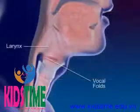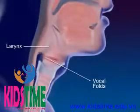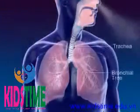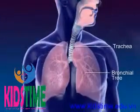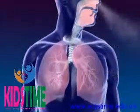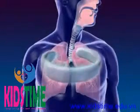The larynx, or voice box, contains the vocal folds. The trachea, or windpipe, connects the larynx to the bronchial tree. The cartilage rings of the trachea prevent the trachea from collapsing.